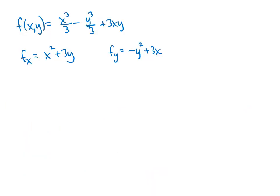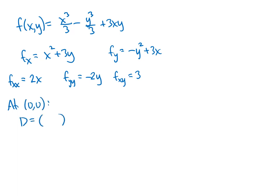To test these critical points, we need the quantity D, which requires the second order partial derivatives. fxx is going to be 2x, fyy is going to be negative 2y, and fxy is going to be 3. At the critical point (0, 0): D equals (2 times 0) times (negative 2 times 0) minus 3 squared, which works out to negative 9. That's negative, so we have a saddle point at (0, 0).